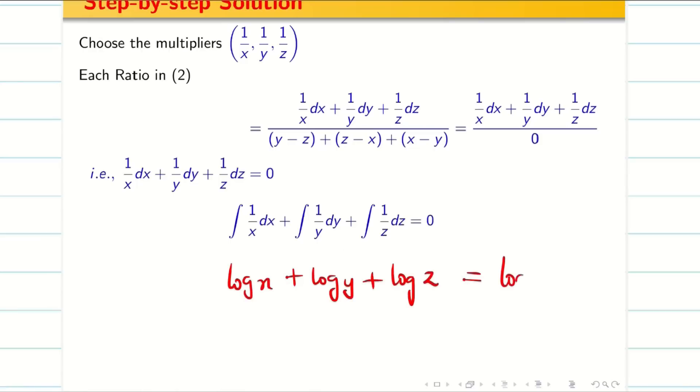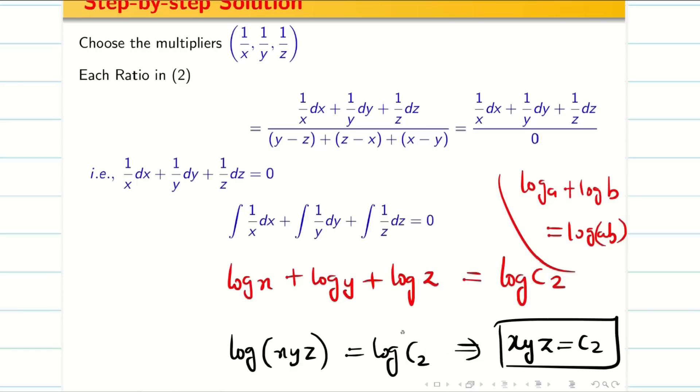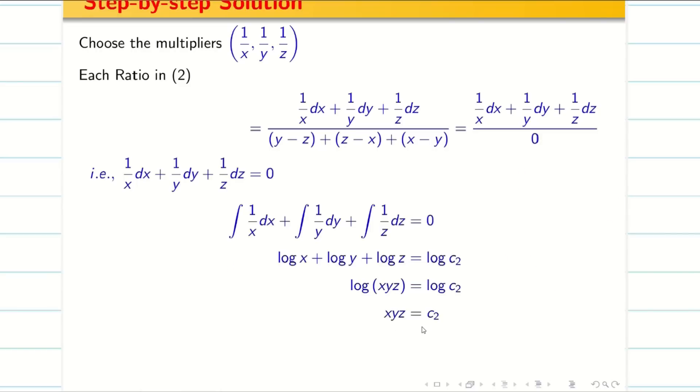Since the problem involves logarithms, I write the constant as log c₂. We know log a + log b = log(ab). So log(xyz) = log c₂. Log cancels, giving xyz = c₂. The solution v is xyz.